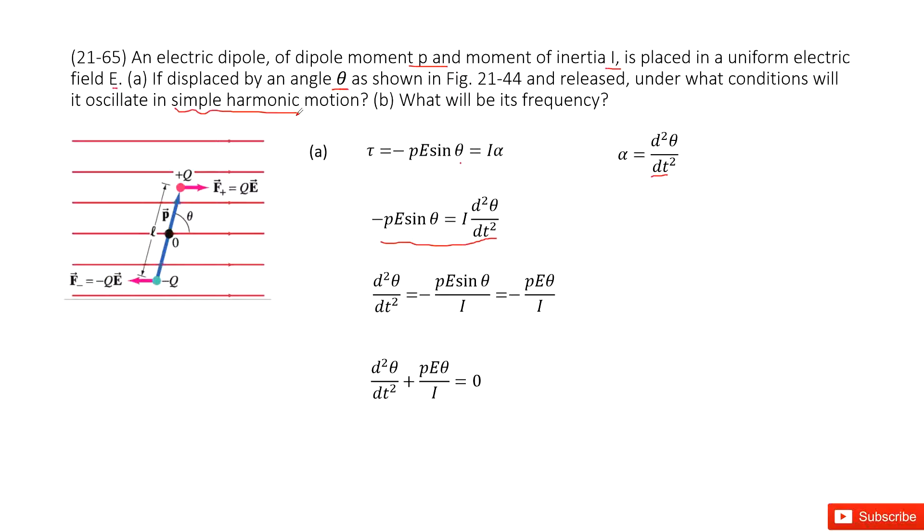For simple harmonic motion, the theta is small, so sin θ equals θ. Now we can convert this equation. Replace sine theta as theta, and move this term to the right-hand side. You get the function that looks like d²θ/dt² + (PE/I)θ = 0. This is the function for simple harmonics.